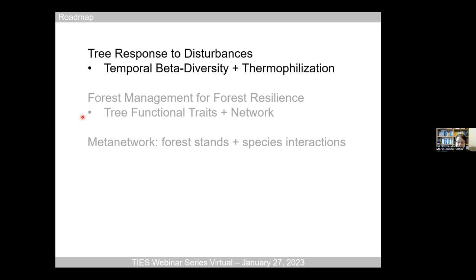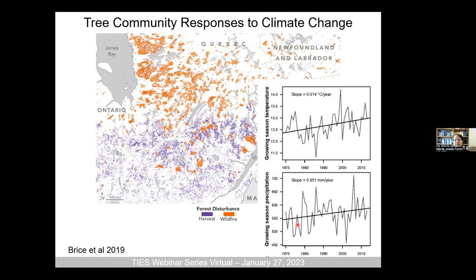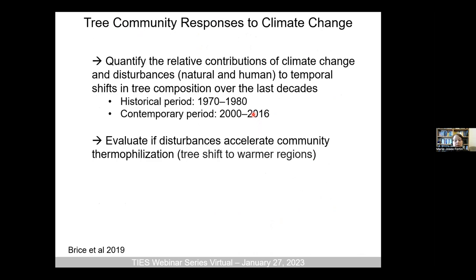Let's see how the forest has changed through time. Looking at the province of Quebec, the purple pixels are harvested stands and the yellow ones are forests that have been burned. This is the work of former PhD student Marie-Laine Bris, in collaboration with Pierre Lajeanne. The map shows the amount and intensity of disturbance from 1985 to 2010. Different intensities affect forest regeneration. There's also a specific species response to climate change, with an increase in growing season length, and changes in temperature and precipitation.